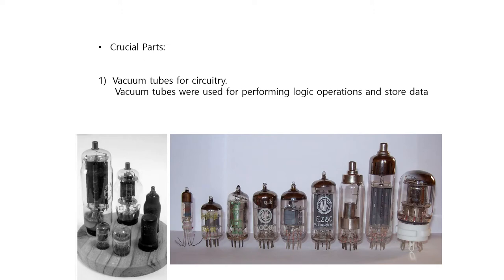The crucial parts in the first generation computers were the vacuum tubes used for circuitry. Vacuum tubes were used for performing logic operations and storing data. The vacuum tube is a device that controls electric current through a vacuum in a sealed container. Vacuum tubes mostly rely on thermionic emission of electrons from a hot filament or a cathode heated by the filament. This type of vacuum tube is called a thermionic tube or thermionic valve.